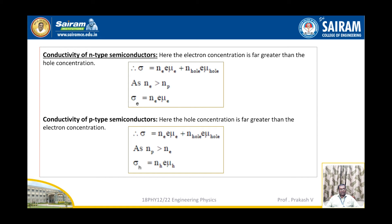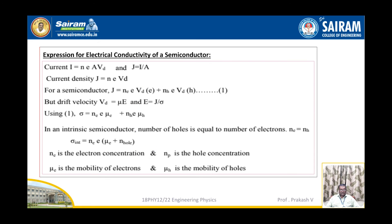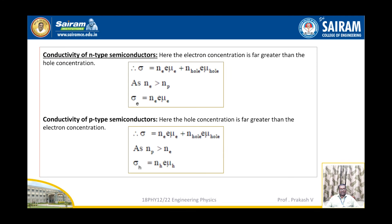For conductivity of p-type semiconductors: here the hole concentration is far greater than that of electron concentration. Therefore, sigma is equal to Ne times E times mu_E plus Nh times E times mu_H. As Nh is greater than Ne, sigma_H is equal to Nh times E times mu_H.